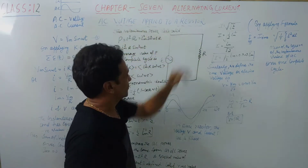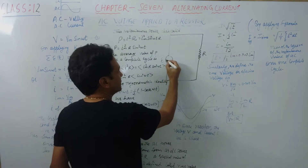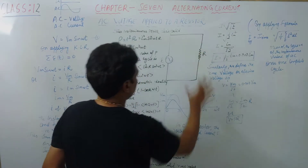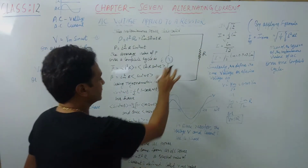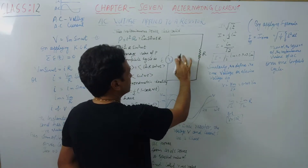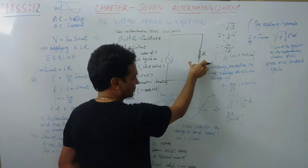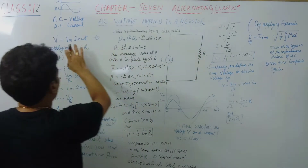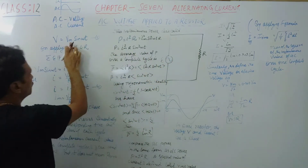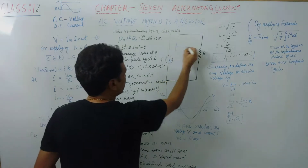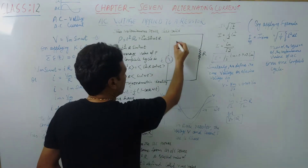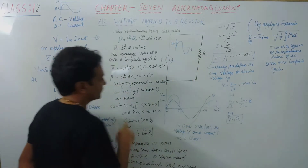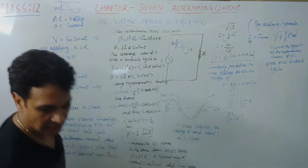We are applying AC voltage to a resistor. This is a purely resistive circuit. Whenever this voltage is given to this resistor, there is a potential drop across the resistor. We are giving a sinusoidal wave — this alternating voltage v = Vm sin(ωt) — to the source of alternating voltage.